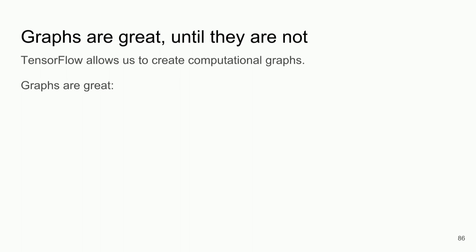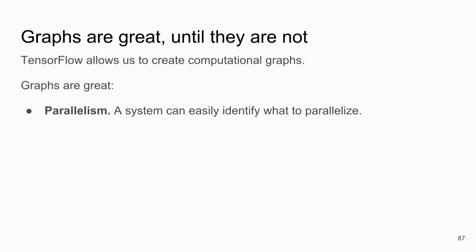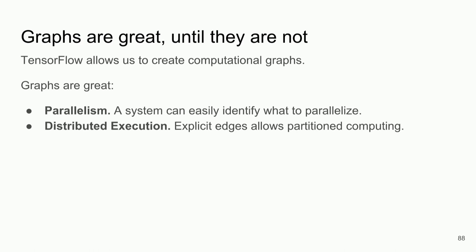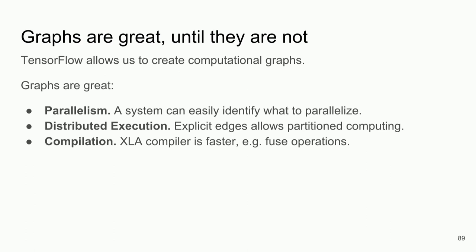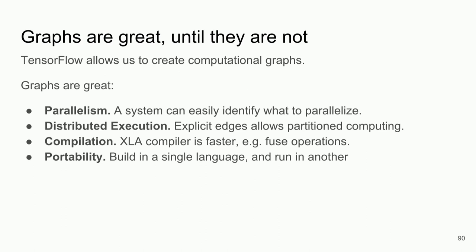What are graphs great for? Parallelism — a system can easily identify what to parallelize, which operations could be run concurrently. Second, distributed execution — there are explicit edges to our nodes, which allows for partitioned computing across different devices. Third, compilation — accelerated linear algebra is a faster way to fuse operations together and TensorFlow is built on top of this. And fourth, portability — build in one language, run in another, because you can export the underlying graph.